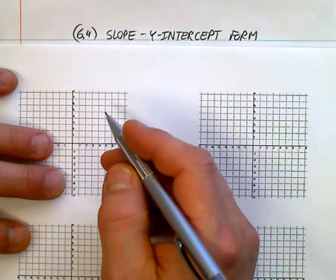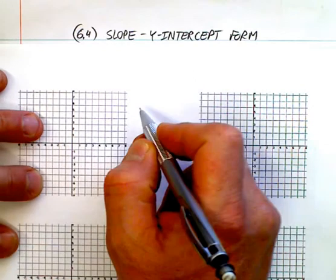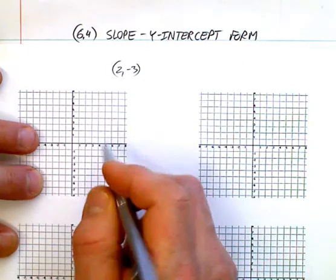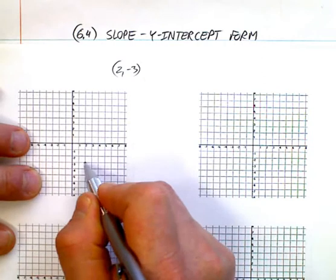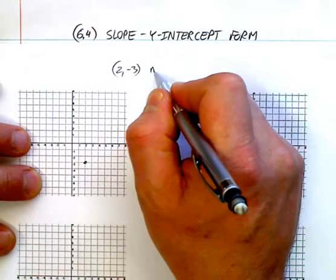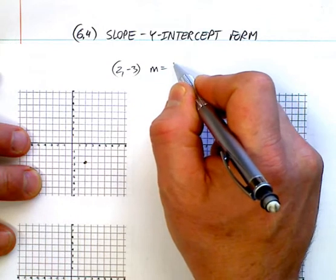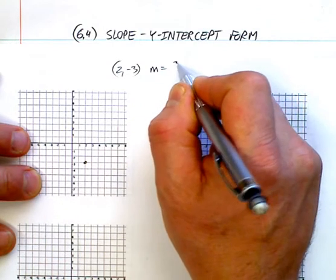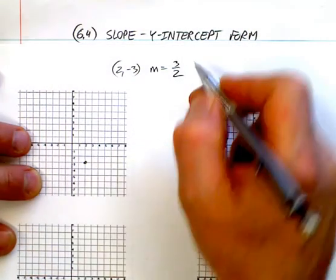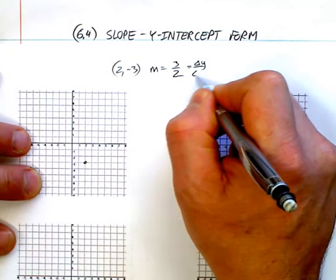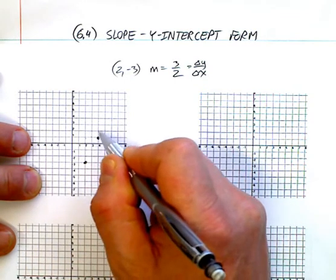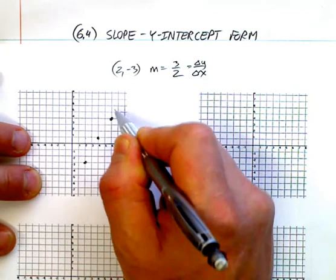Now what you guys have done so far is you've been able to plot a point. So if we look at, say, 2 and negative 3, hopefully we'll be able to plot that at 2 and negative 3 like this. Now if I gave you a slope and said the slope is 3 halves, hopefully you understand that means delta y over delta x, which means you go up 3 and then over 2, up 3 and over 2, up 3 and over 2.